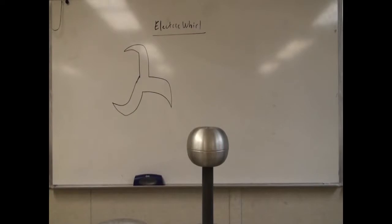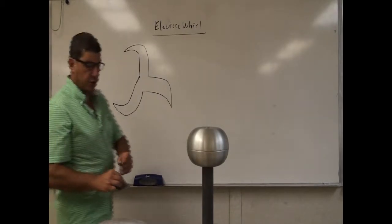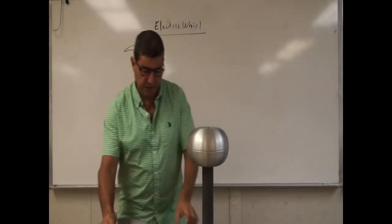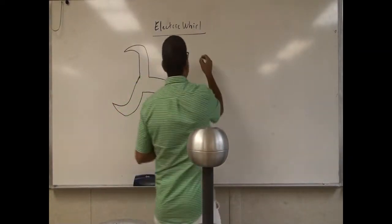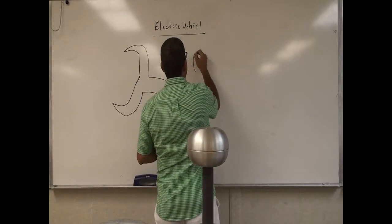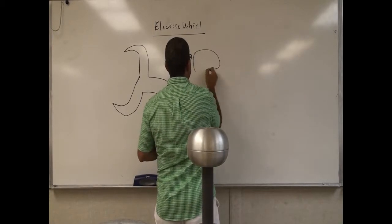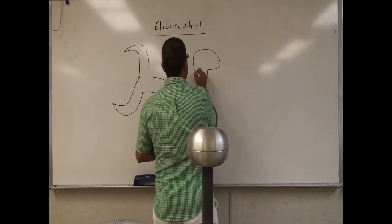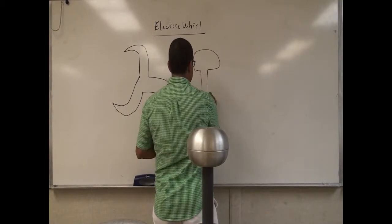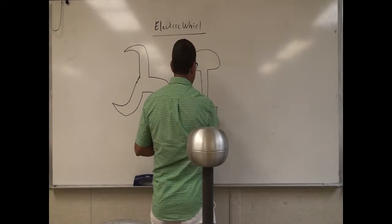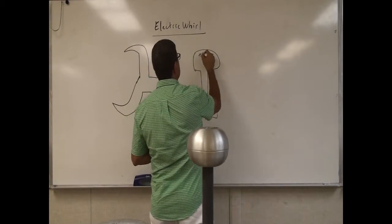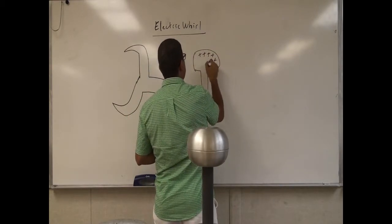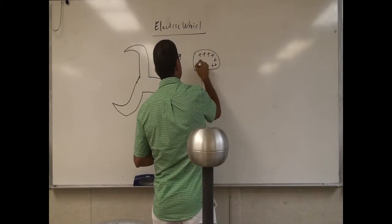So let's see what is happening here. When I bring that close to the Van de Graaff generator, what will happen? The Van de Graaff generator is a device that can be used to create static electricity. So let's say the charge of the Van de Graaff generator is positive.